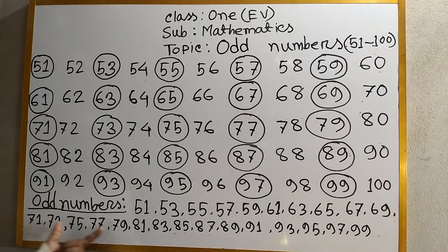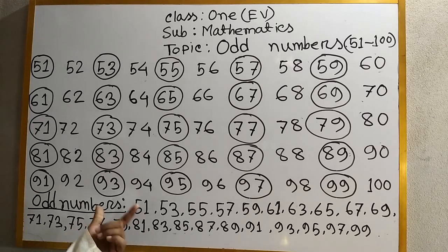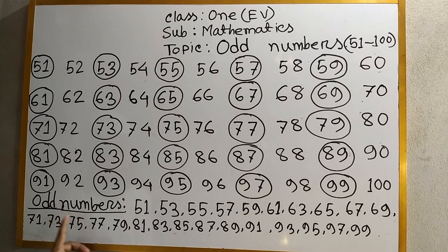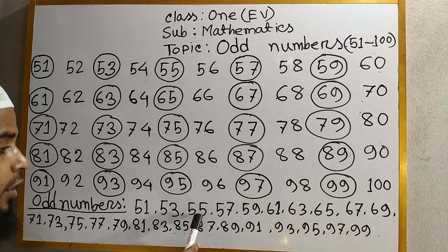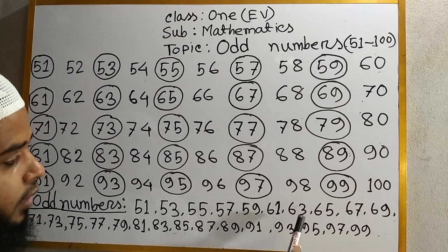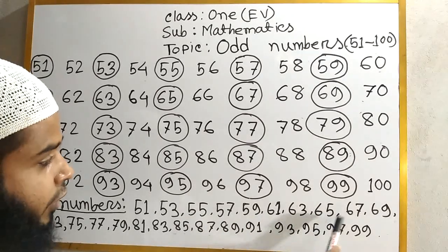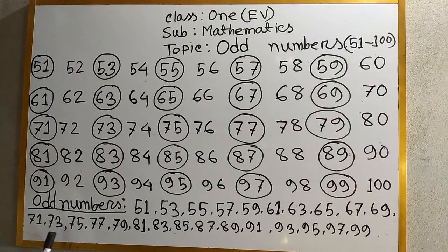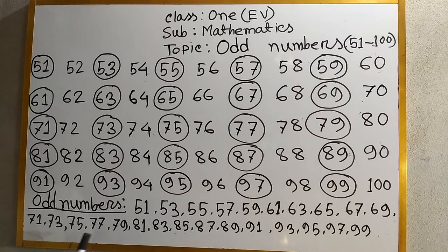Now I write only the odd numbers. Read the odd numbers: 51, 53, 55, 57, 59, 61, 63, 65, 67, 69, 71, 73, 75, 77.